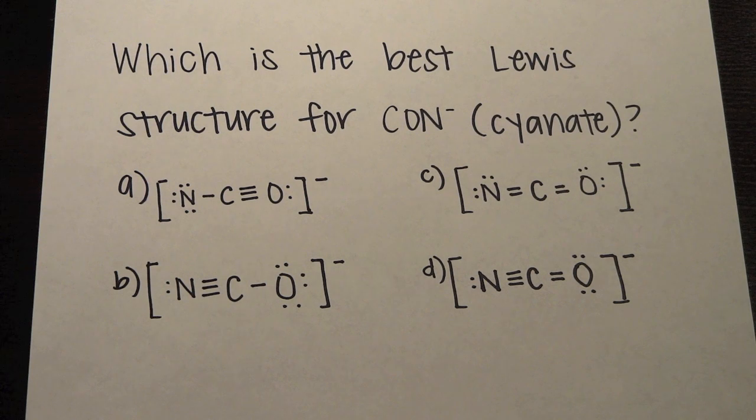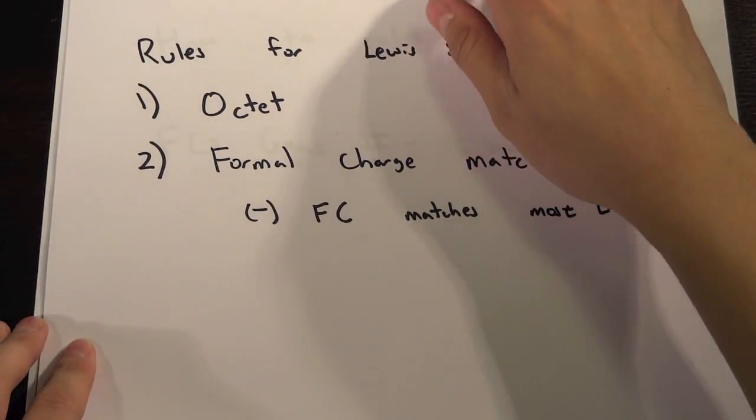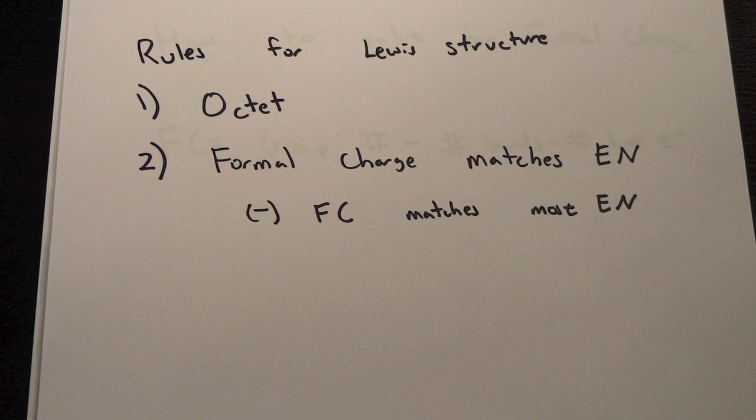So when we want to solve this, we want to look at a couple of rules to define how we find the best Lewis structure. So we see here that there's two rules, two rules that we need for defining the Lewis structure.